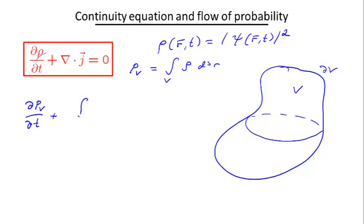and the second term is going to be an integral of the divergence of j, and the sum of these two terms is equal to zero.